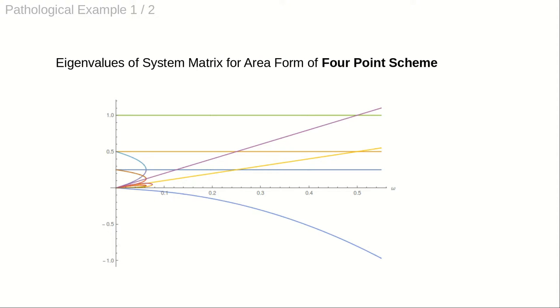However, we can artificially create subdivision schemes that do not have the required eigenvalue structure. The graph shows the eigenvalues of the matrix for the area form of the four-point scheme. If the tension parameter exceeds 0.5, the largest eigenvalue is greater than 1.